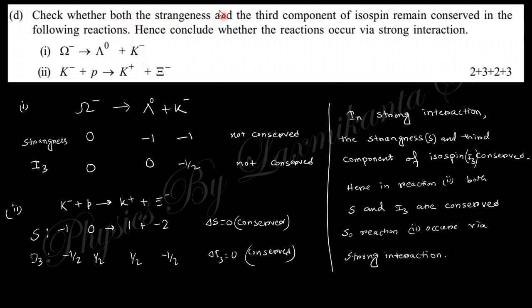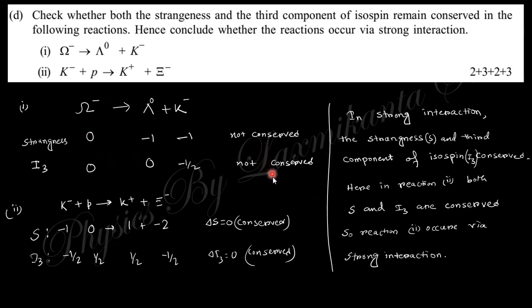The next question asks to check whether both strangeness and the third component of isospin I₃ remain conserved in two given reactions. For reaction one: the strangeness numbers are 0, −1, and −1 — strangeness is not conserved and I₃ is also not conserved, so reaction one is not possible. For reaction two: strangeness is conserved and I₃ is also conserved. For strong interactions, both must be conserved, which holds for reaction two — so reaction two is possible via strong interaction but reaction one is not.